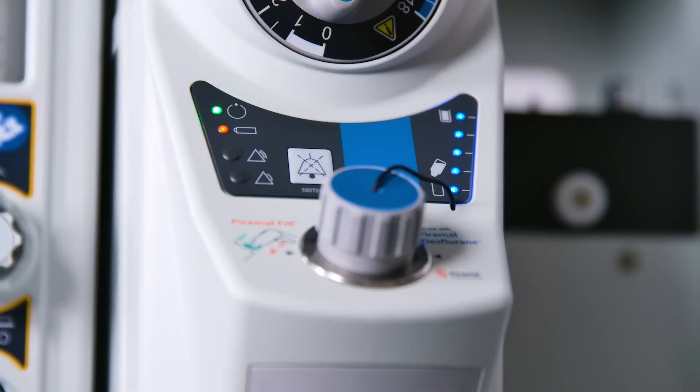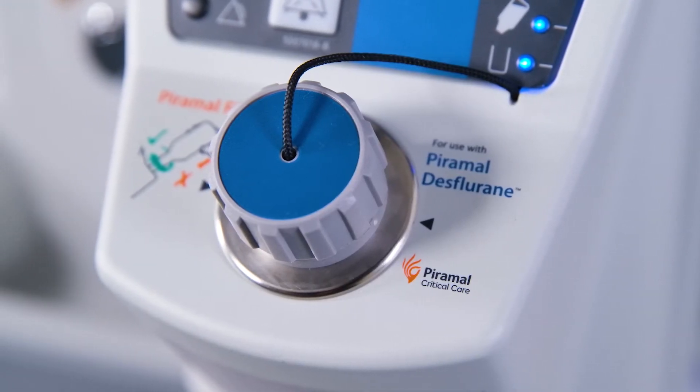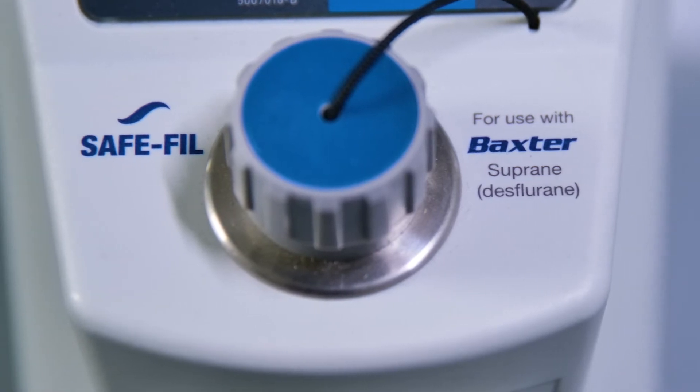Alarms and status indicators are located on the front of the vaporizer. The Sigma EVA is available with the Pyramol Fill or Baxter SafeFill filling system.